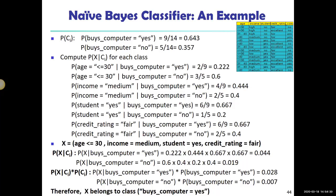A student asked whether this approach is similar to chi-square contingency tables. The instructor confirmed there is definitely similarity: in chi-square tests, we compute expected values by applying an independence assumption — that's how we get the expected value to compare against the observed value.